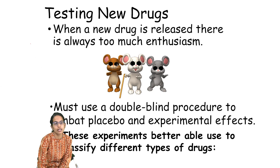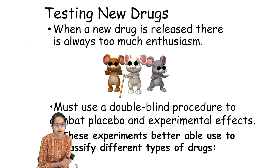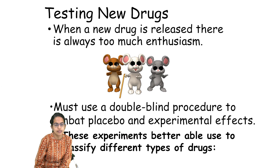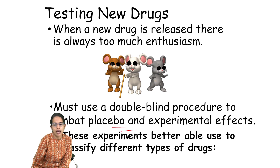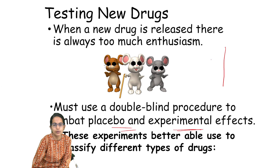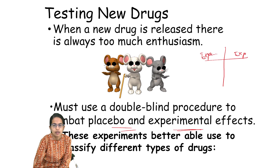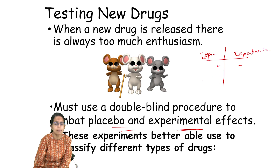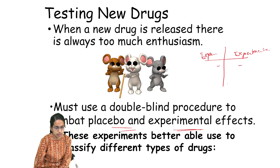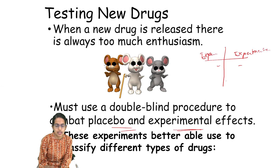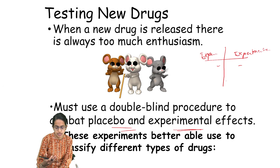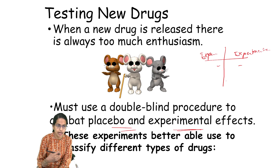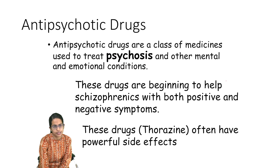Whenever a new drug is released, there is lots of enthusiasm in the market and double-blind procedures are done. That means we have a placebo group and an experimental group, and we try to create a study where both the experimenter and the participant do not know what the conclusions would be — neither of them are aware of the outcomes. This is the double-blind study which is conducted.